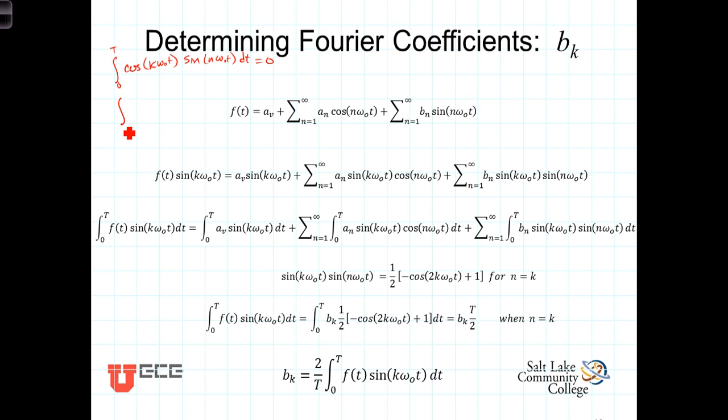And the integral from 0 to t of the sine of k omega-0 t times the sine of n omega-0 t dt equals 0 except when n equals k. And under those circumstances, it does not equal 0. We'll see what it equals here in just a second.